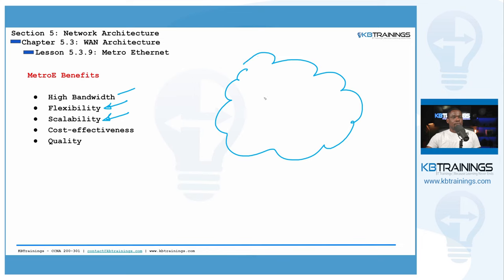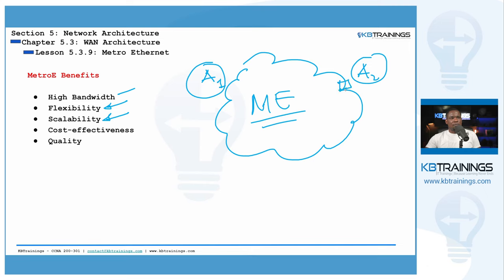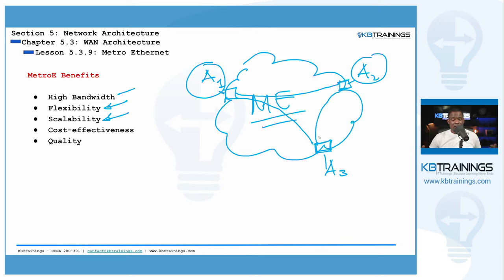For example, if you have a Metro E ring with customer sites A1 and A2 each connected to a provider switch, adding a third site A3 is very easy. As long as there's a provider switch at that location, you just plug in A3 and the service provider creates an EVC between A1 and A3 or A2 and A3 as needed — it's very scalable. Metro E is also cost effective; it doesn't cost as much as some other leased line or private line options.